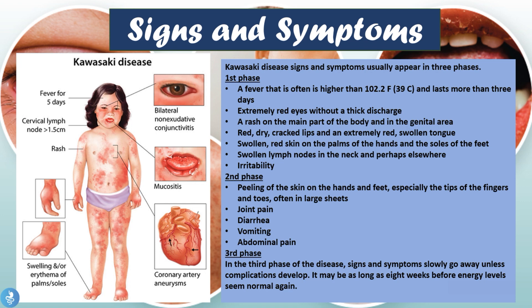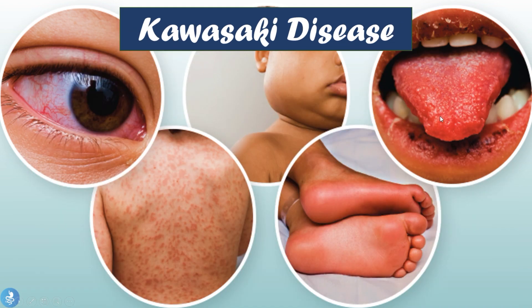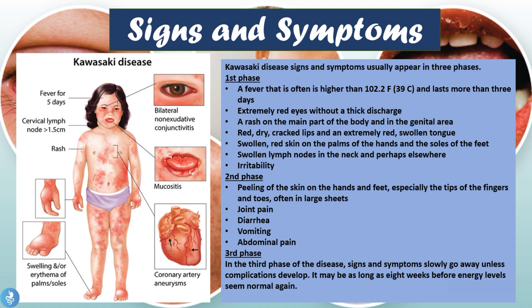Kawasaki disease signs and symptoms usually appear in three distinct phases. The first phase includes a fever often higher than 102.2°F (around 39°C) lasting more than three days, extremely red eyes without thick discharge, a rash on the main part of the body and in the genital area, red dry and cracked lips, and an extremely red swollen tongue — usually called strawberry tongue — as well as swollen red skin on the palms and soles, swollen lymph nodes in the neck region, and irritability.